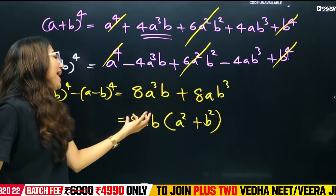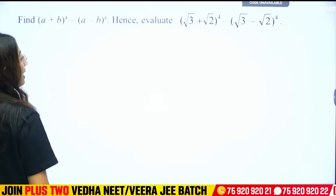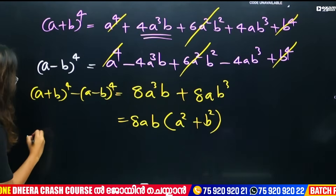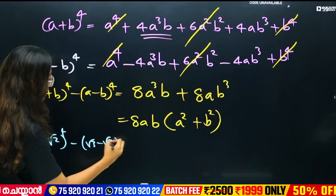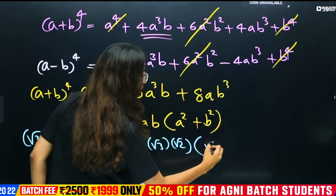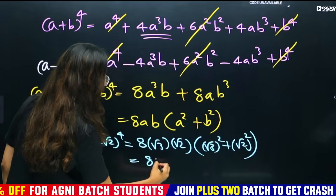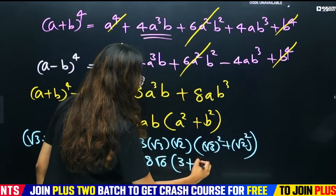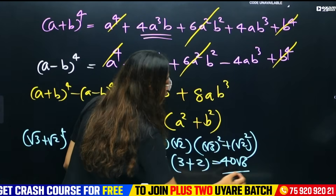The difference is 8ab(a² + b²). Now substitute: a = √3 and b = √2. So we get 8 × √3 × √2 × (√3² + √2²) = 8√6 × (3 + 2) = 8√6 × 5 = 40√6. So 40√6 is the answer.